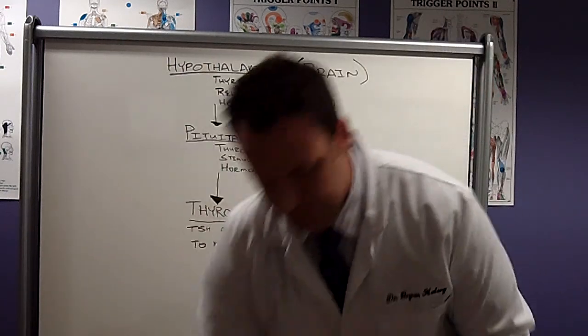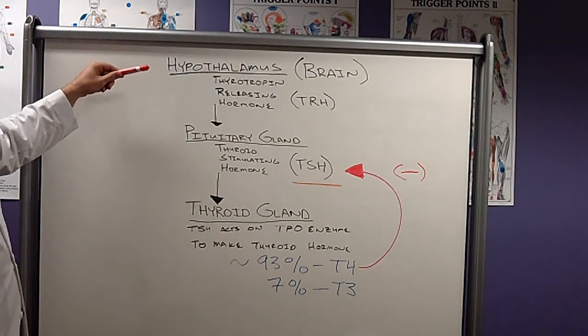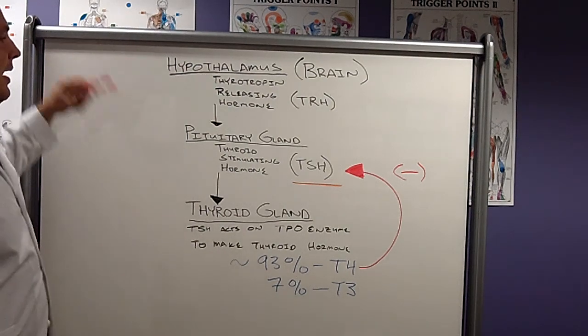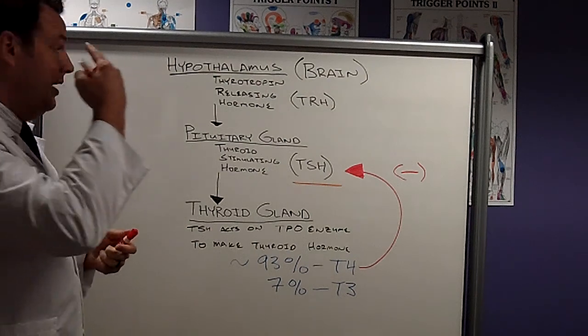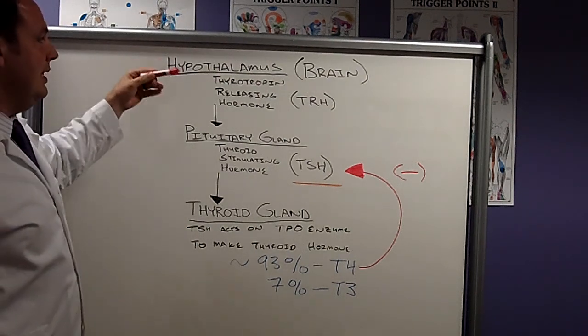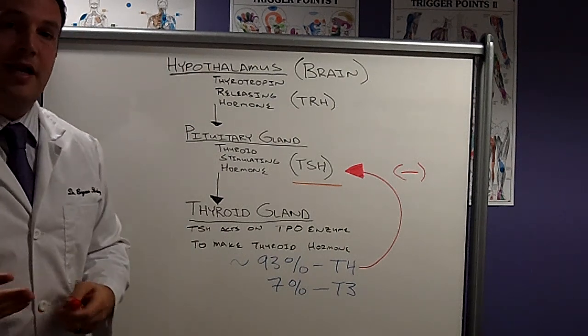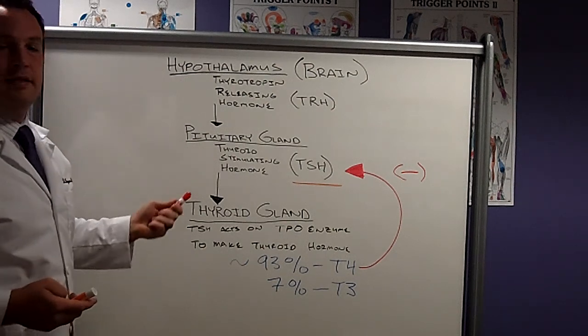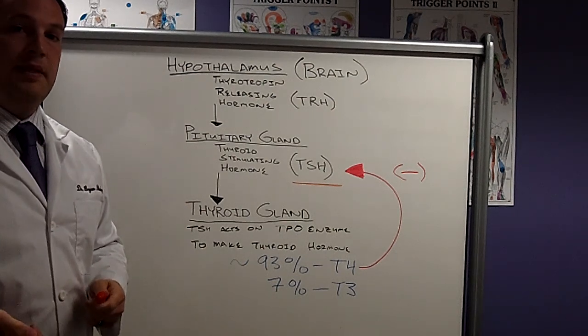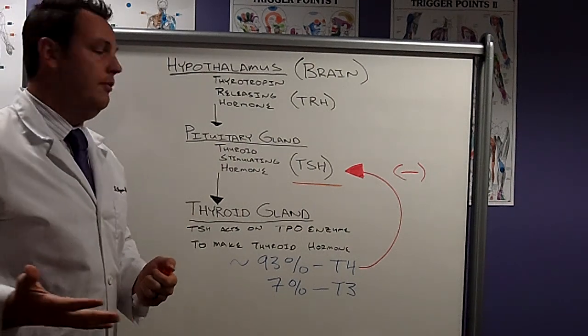So let's start up high here. We have the brain, specifically the hypothalamus of the brain and the pituitary gland, a small little gland that sits at the base of the brain right behind your eyes. This hypothalamus releases thyrotropin-releasing hormone, or TRH. The TRH now acts on the pituitary gland. The pituitary gland releases thyroid-stimulating hormone. Now this test is one that is commonly checked in the medical realm.